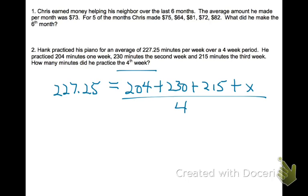Now start this out by multiplying both sides by that number that you divide by. So on the right side, those 4s will divide out. On the left side, you will get 909. Then add the values that you know, which will give you 649, plus that missing value.